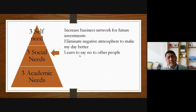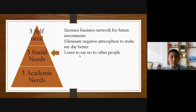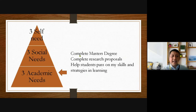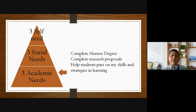Social needs examples: 'Increase business network for future investment.' 'Eliminating negative atmosphere to make my day better.' 'Learn to say no to other people.' See — that wasn't bad. That was a phrase or a sentence. And last, academic needs: 'Complete master's degree.' 'Complete research proposals.' I help students pass on my skills and strategies in learning.